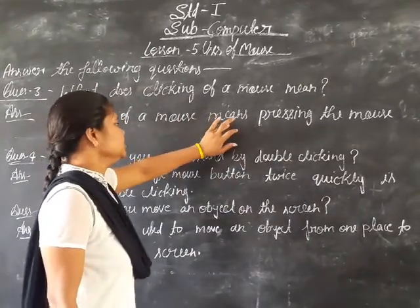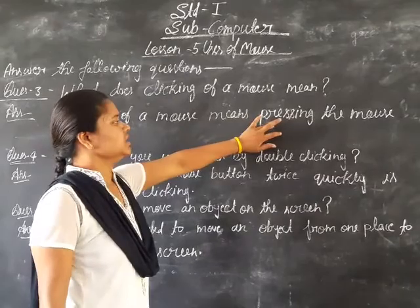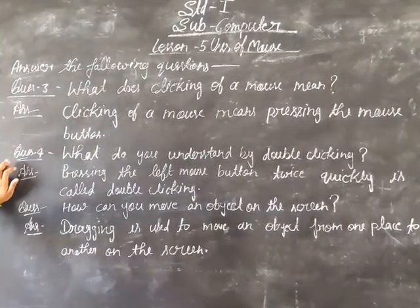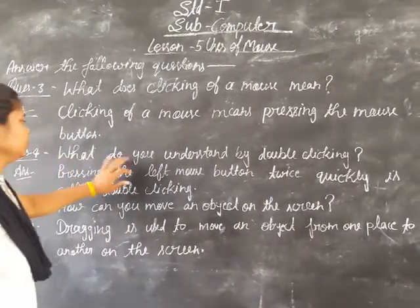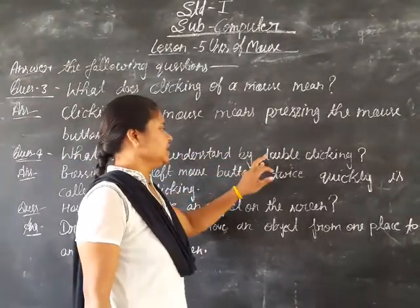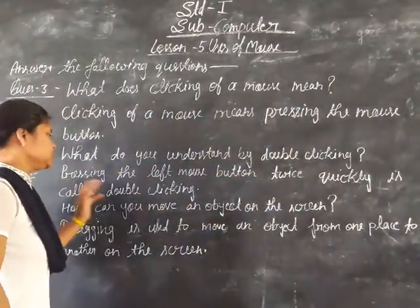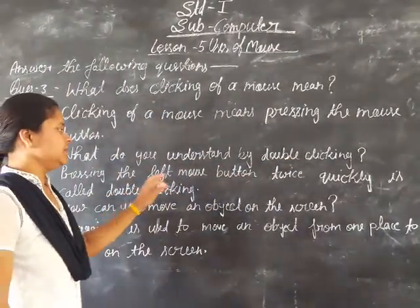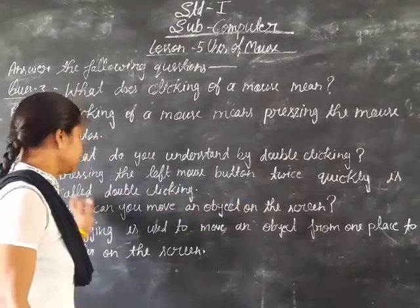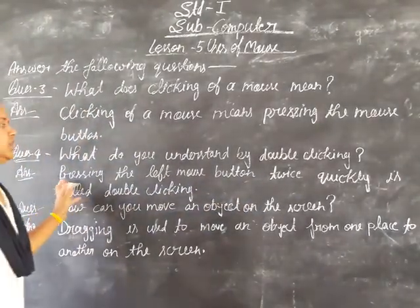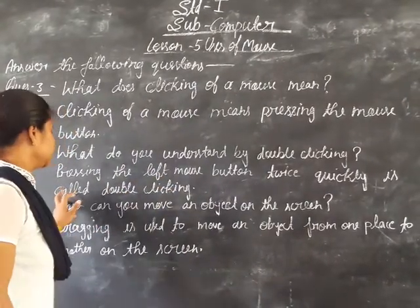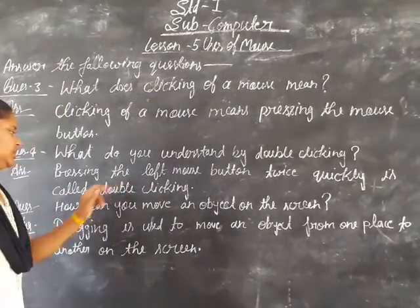Next question, question number fourth: what do you understand by double clicking? Answer: pressing the left mouse button twice quickly is called double clicking.